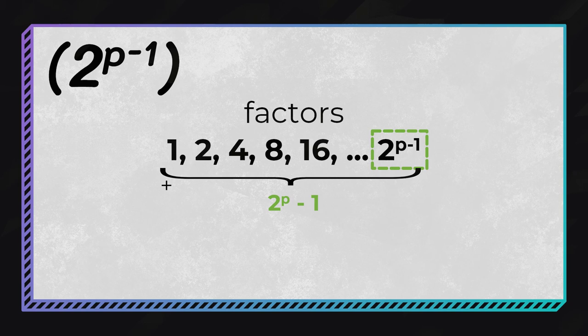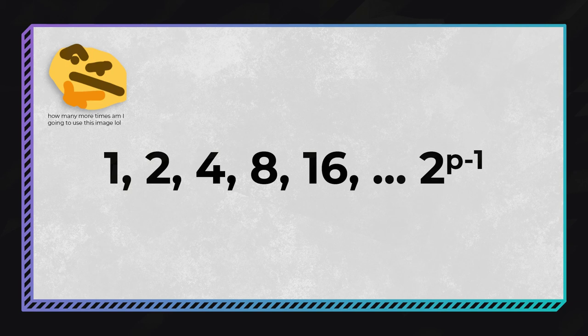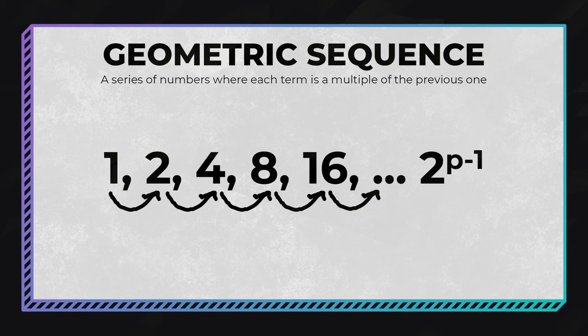While we are on the topic of part t's factors, how else can they be conceptualized? A concept that might come to mind is the geometric sequence. To review, a geometric sequence is a series of numbers where each term is a multiple of the previous one. Term n plus 1 is found by multiplying term n by a constant, called the ratio. Back to our problem, the next factor of part t can be found by multiplying the previous one by 2. So, this list can be said to be a geometric sequence starting at 1 with a ratio of 2.